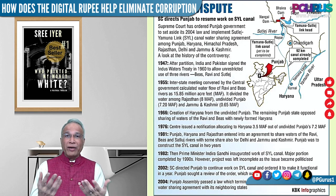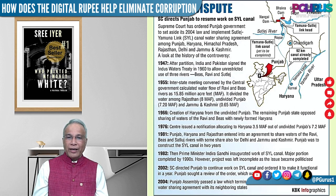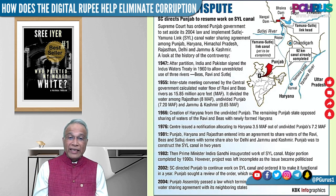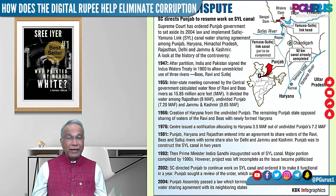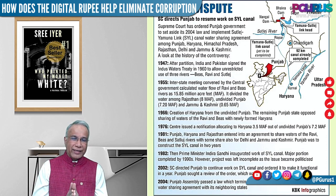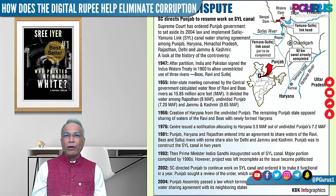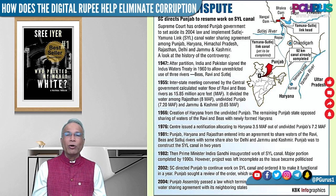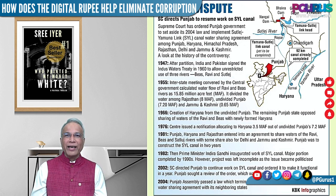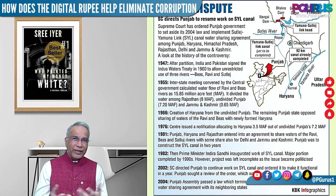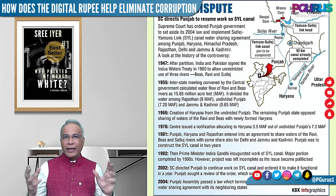In 1982, with much fanfare, Prime Minister Indira Gandhi inaugurated this project. A major portion was to have been completed by the 1990s, but it has never been completed. There were many problems — for example, Chandigarh is the capital of Punjab, and when Haryana was carved out, it was said Haryana will build its own capital city, but until then they would share. So even today, Haryana still has much of its administration in Chandigarh. These kinds of unresolved issues have become a persistent problem.